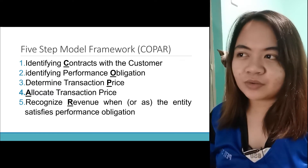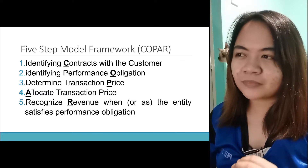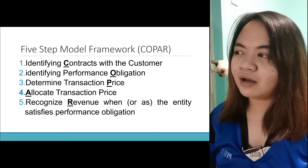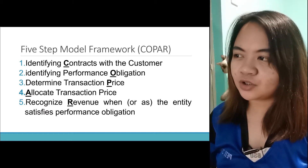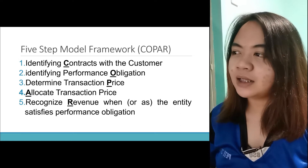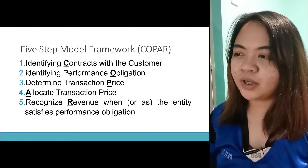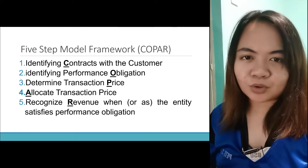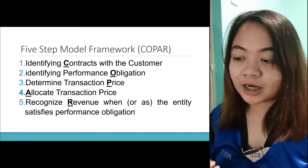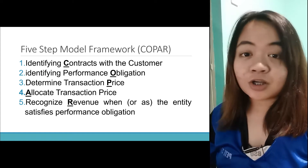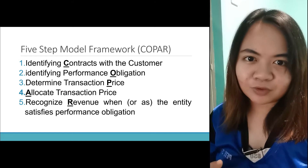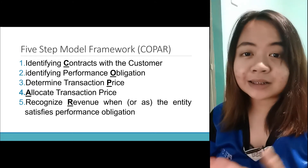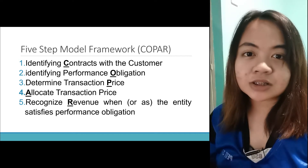We have the five-step model framework, also known by the acronym COPAR. We have: identifying contracts with the customer, identifying performance obligations, determining transaction price, allocating transaction price, and recognizing revenue when or as the entity satisfies the performance obligation. This five-step model framework you have to consider when you are accounting for contracts. Kailan ba dapat i-recognize yung revenue — over time or at a certain point in time? Depende sa category kung saan siya papasok.